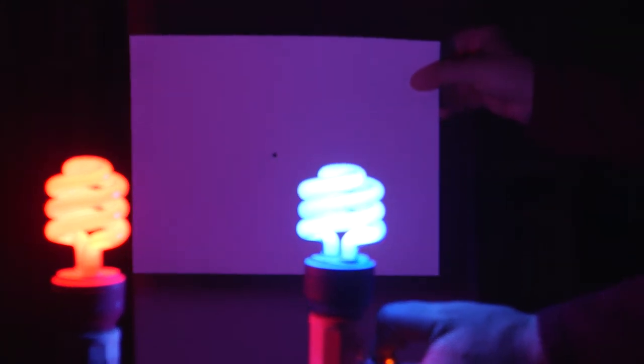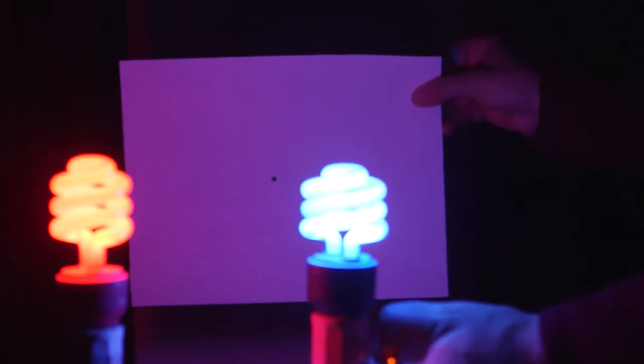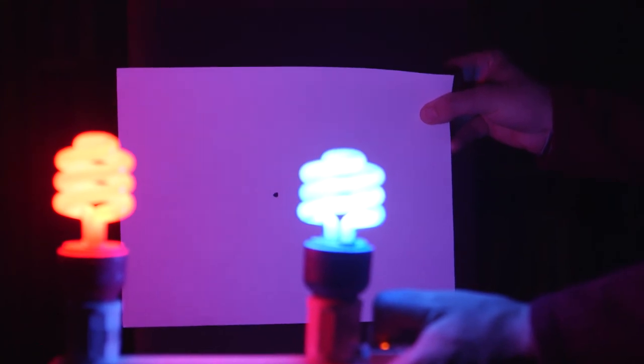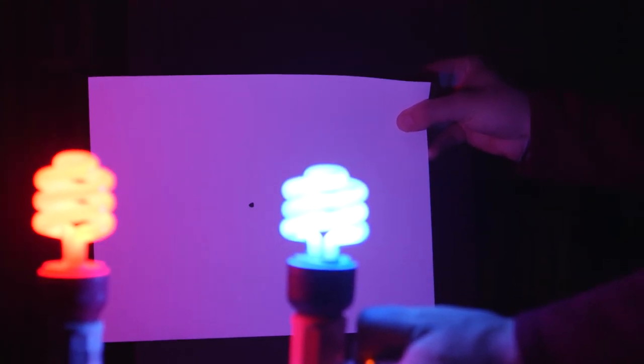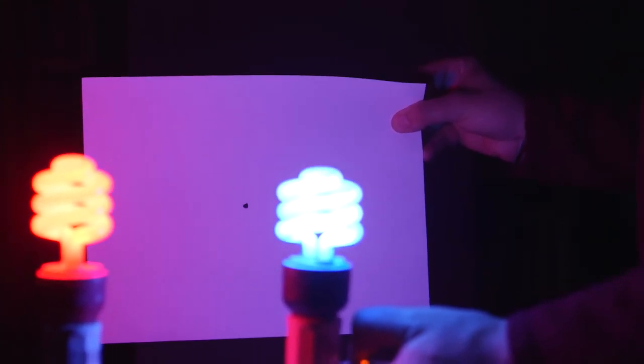If I bring the pinhole up, and you look at the screen, what do you see? You can see the two light bulbs, a red one and a blue one. So the hole is letting through just a few images, and those few images are being projected onto the board.